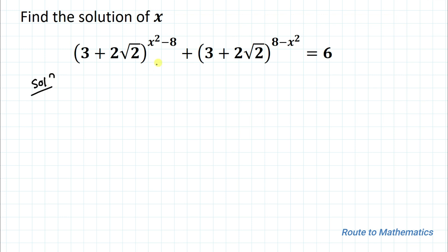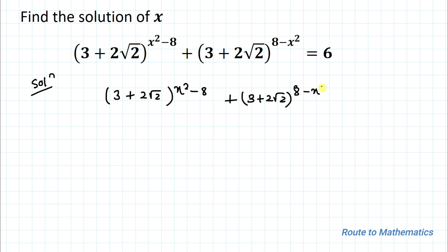We have one equation: (3 + 2√2)^(x² - 8) + (3 + 2√2)^(8 - x²) = 6.